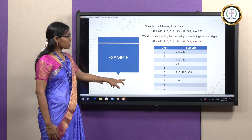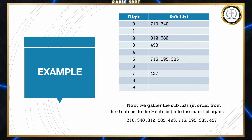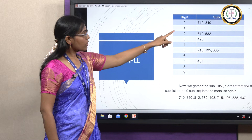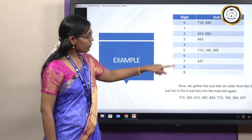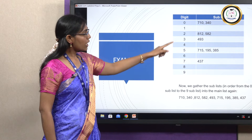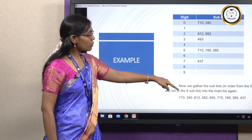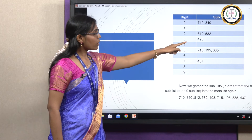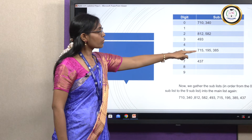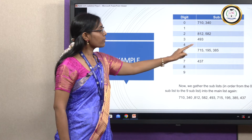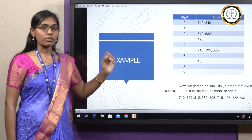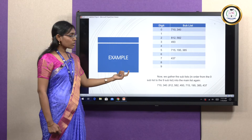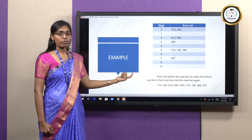After forming the sub-lists, we write them out in order from 0 to 9. The result is: 710, 340, 812, 582, 493, 715, 195, 385, 437. This is your first step — the array rearranged after sorting by the 1s digit.